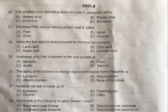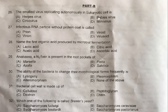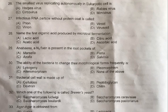So now let's get started. Part B, question number 26: The smallest virus replicating autonomously in a eukaryotic cell is — Option A: Herpes virus, Option B: Rabies virus, Option C: Circovirus, Option D: Mimivirus. The correct answer is Option C, Circovirus.